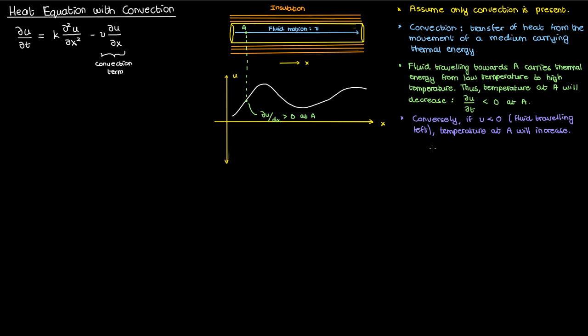Let's now look at the opposite scenario and see what happens at a point where the partial of u with respect to x is negative, where the temperature is decreasing as we go down the rod. So somewhere over here which I'll call point B.